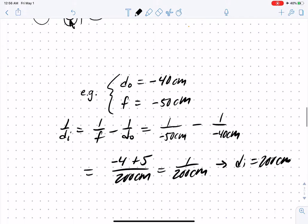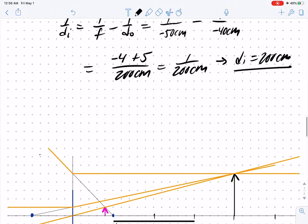If we try that and do the calculation, we end up finding a real image distance of 200 centimeters. Now that all seems like a bit of magic with negative numbers, so let's try to construct it.